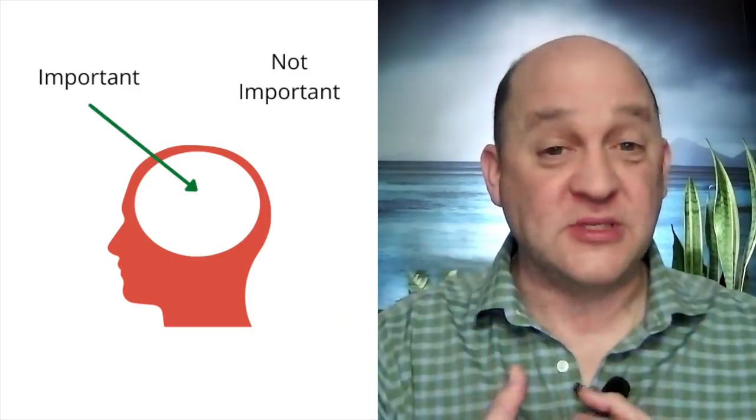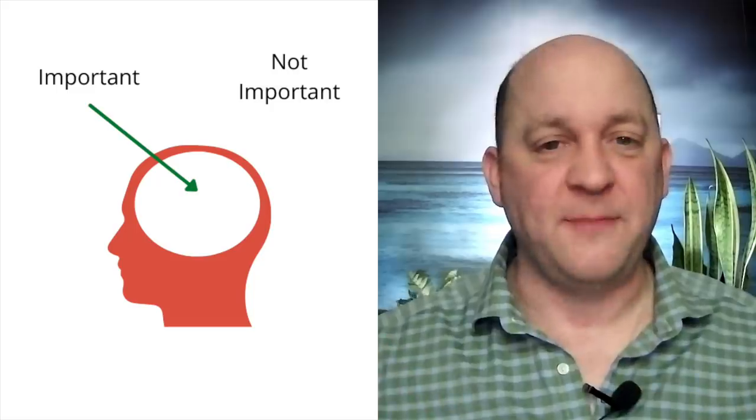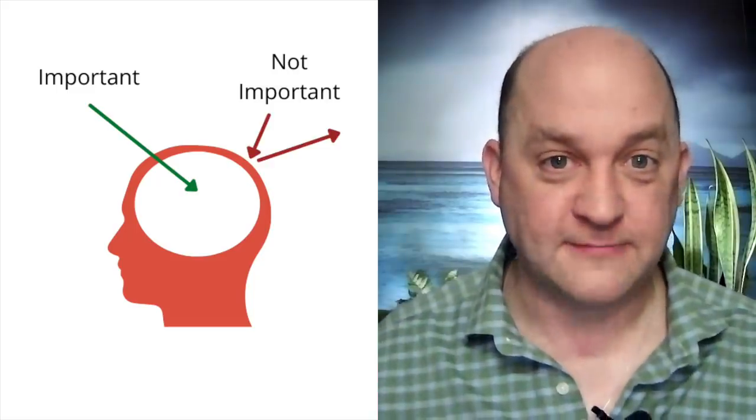That brings us to phase two: vibrational alignment. The vibrational alignment phase is critical. We all operate in a very complex world, and our brains filter out irrelevant information so we can focus on what's important. Our brains bring what's important to us to our awareness, while anything deemed unimportant gets filtered out. Our mental and emotional state in any given moment can greatly affect that filter — greatly influencing what gets through and what remains filtered out.